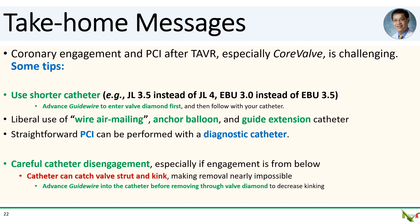Take-home messages: Coronary engagement and PCI after TAVR, especially with a CoreValve, can be very challenging. First, use a shorter catheter—for instance, a JL 3.5 instead of a JL 4, or an EBU 3 instead of an EBU 3.5. If you have difficulty entering the valve diamond with a catheter, advance a guide wire through the diamond first, and then follow with your catheter.